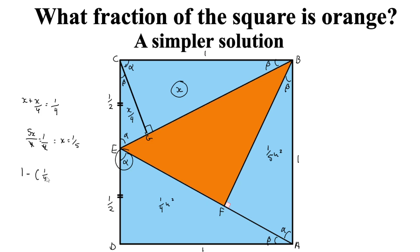All we have to do now is subtract the areas of the blue triangles — triangle BCE, ADE, and ABF — to find the orange fraction. And there we go, that gives us the answer.